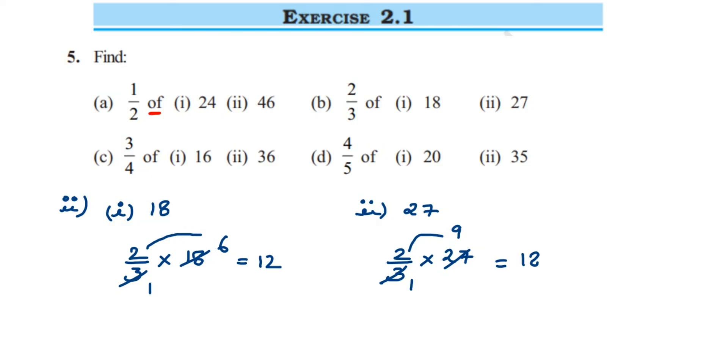The next question, part c: the first one is 16. So 3/4 of—'of' means multiplication—16. We can cancel four and 16: four ones are four, four fours are sixteen. The number left in the numerator is three and four. Three fours are twelve.